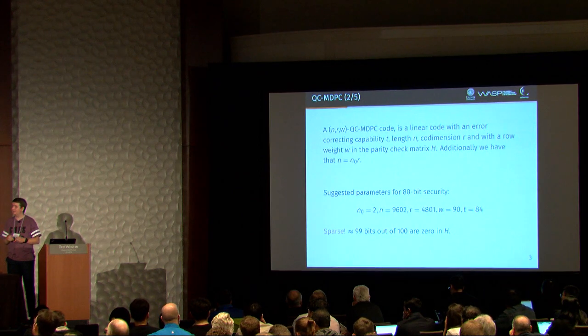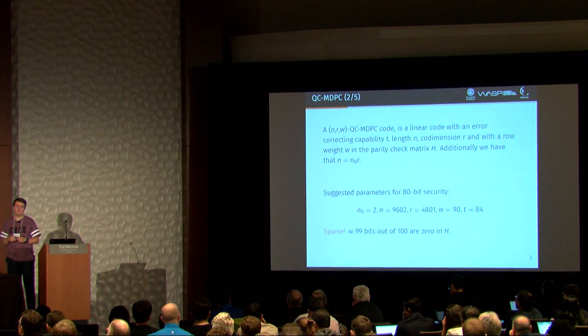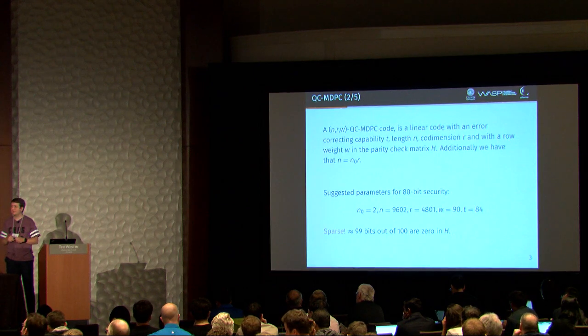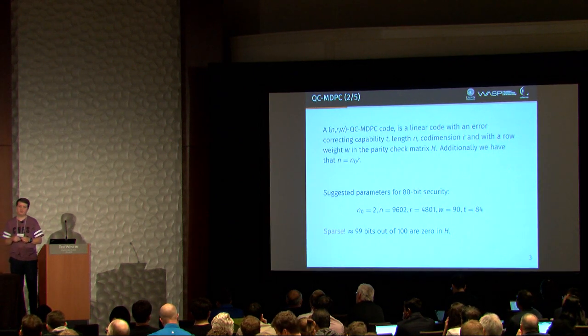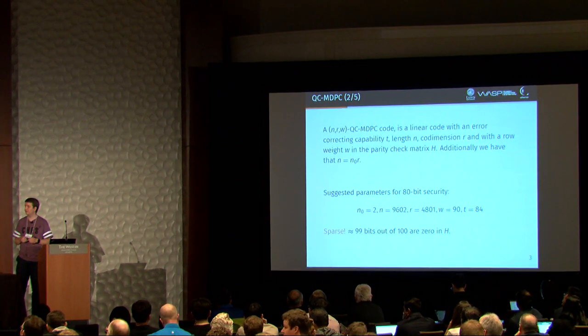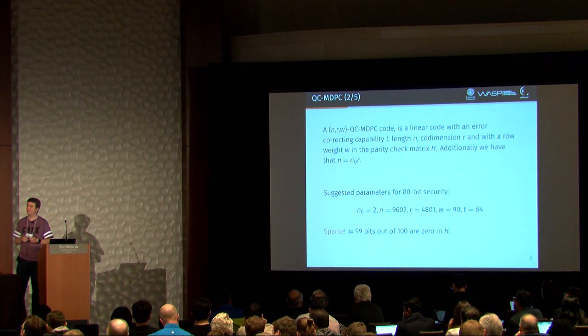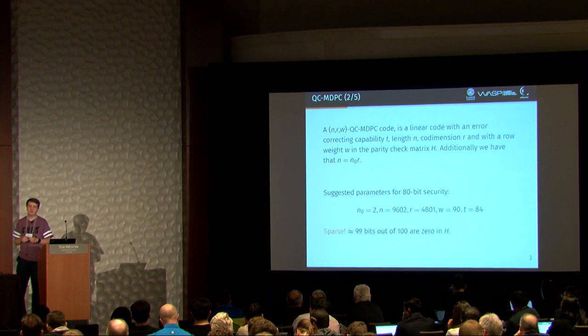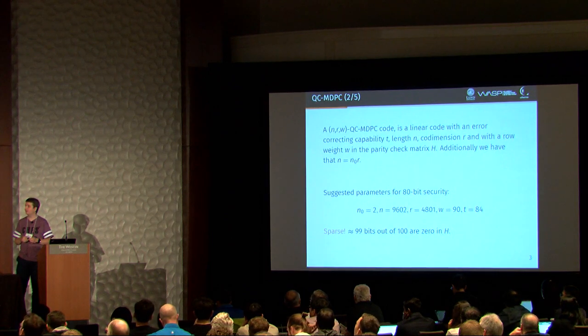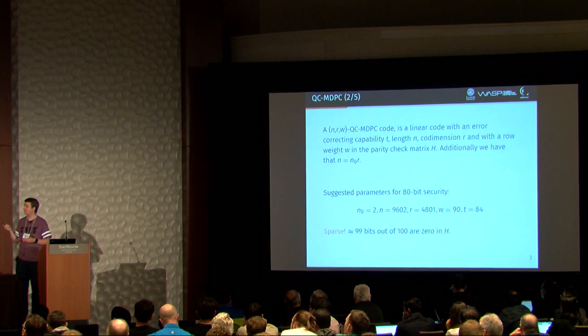So this means that we have about 99 bits out of 100 are 0. So this gives us a very sparse matrix. But actually, this is the reason why this is a medium density code. A low density code would have even fewer ones in the matrix.